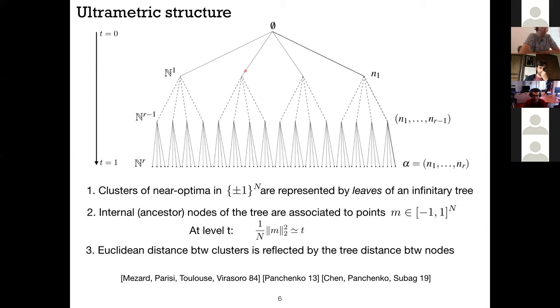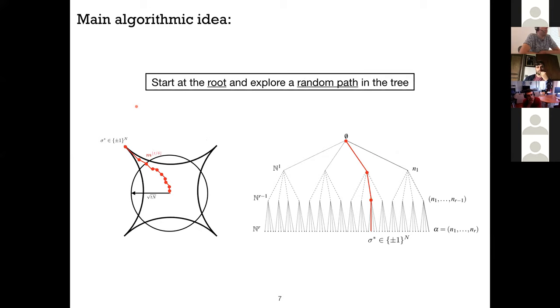Okay, so the main algorithmic idea is to exploit this ultrametric structure. What we're going to try to do is algorithmically start at the root and then try to navigate and explore a random path in this tree until we get to the leaf, and then in which case we'll get an approximate ground state. And geometrically there is an equivalent picture geometrically for this approach. It is you start from the origin of R^n and then you try to do some kind of diffusion that kind of mimics this tree behavior, and then at some point at the end you would hope to reach one of the apexes or one of the extremal points of the cube.